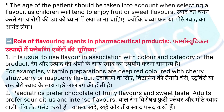Role of flavoring agents in pharmaceutical products. 1. It is usual to use flavor in association with color and category of the product. For example, vitamin preparations are deep red colored with cherry, strawberry or raspberry flavor. Udaharan ke liye, vitamin ki tayyari cherry, strawberry ya raspberry swad ke saath geharay lal rang ki hoti hai.